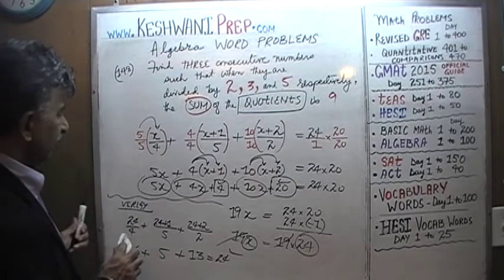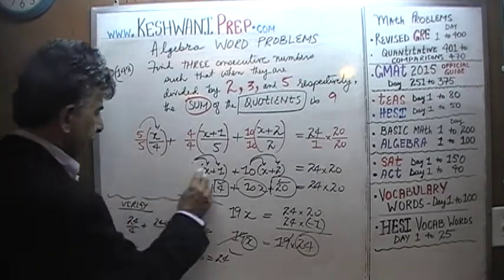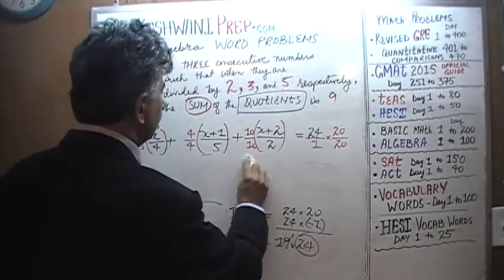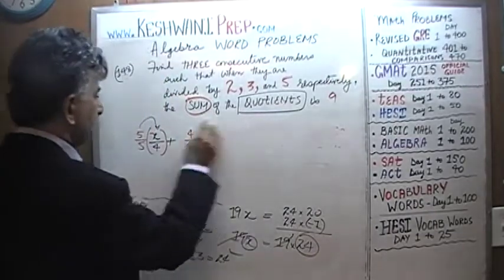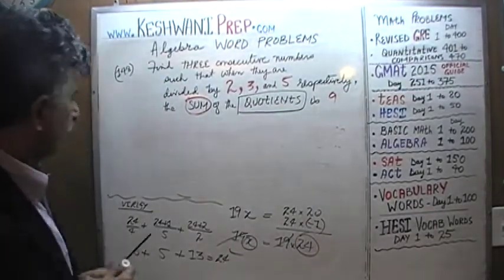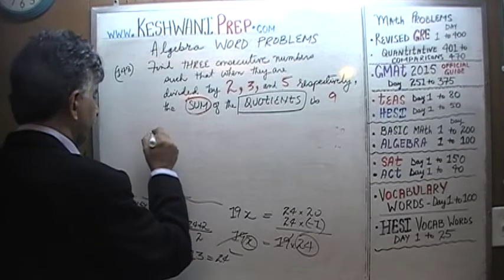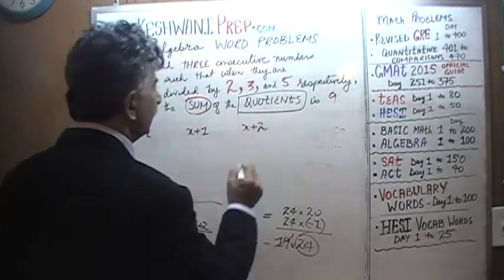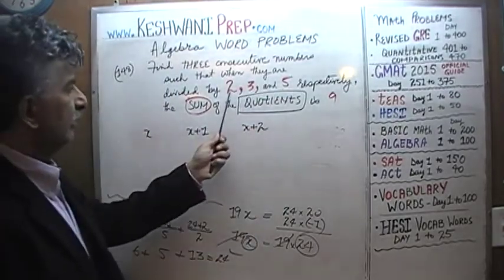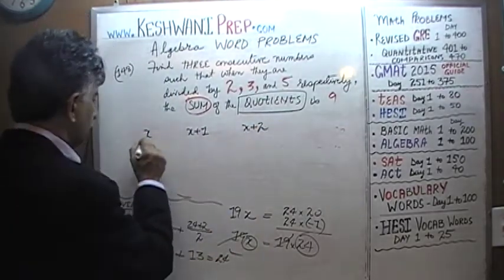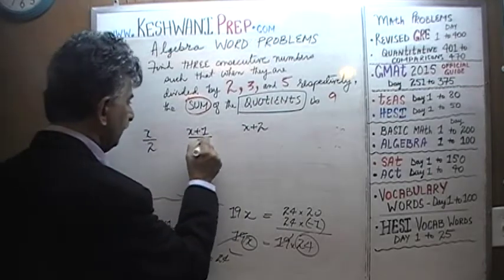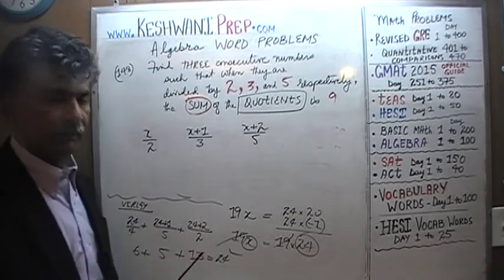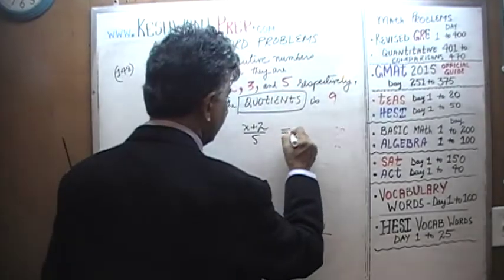Let's erase the board and start fresh. We have three numbers: x, x plus one, and x plus two. We are told that when we divide these by 2, 3, and 5 respectively, the three quotients have to add up to 9.